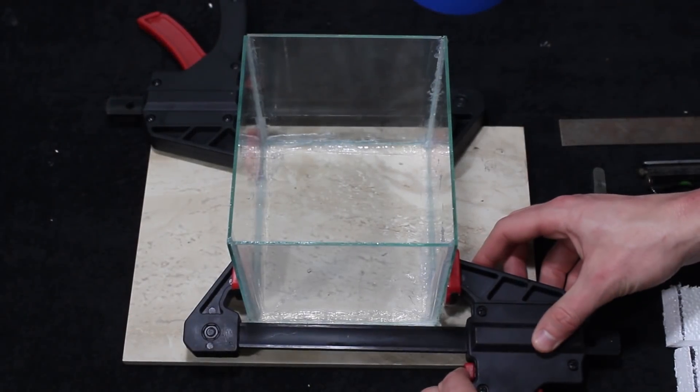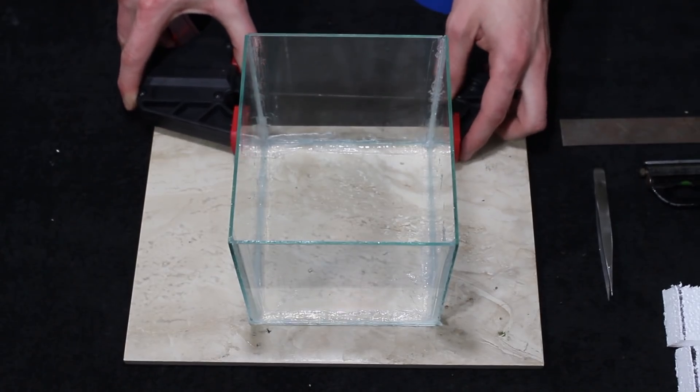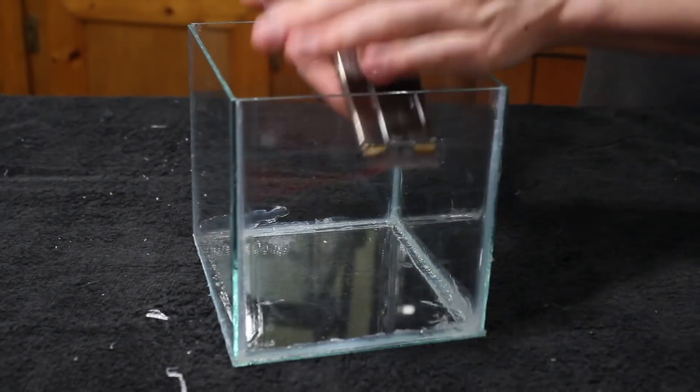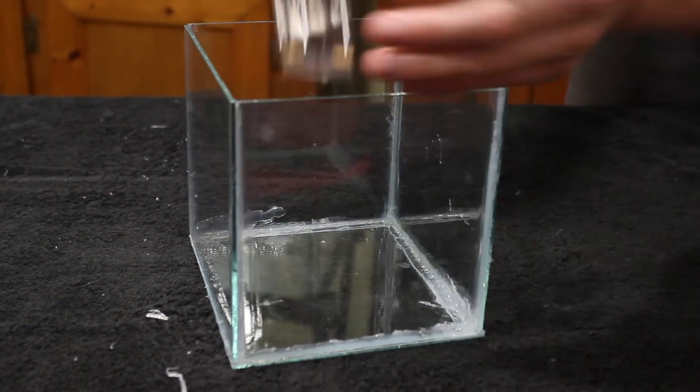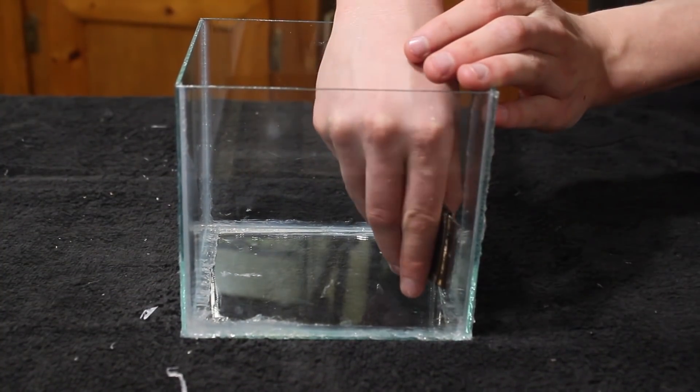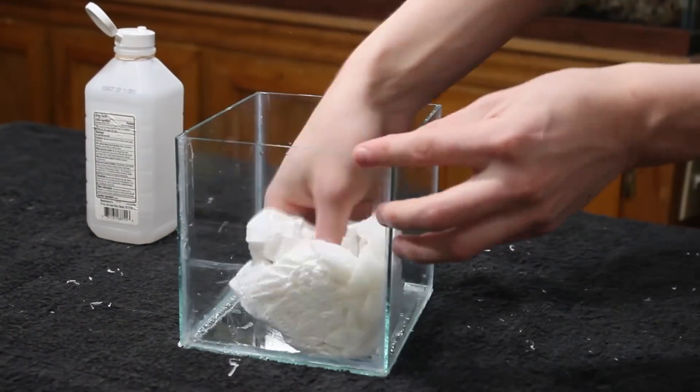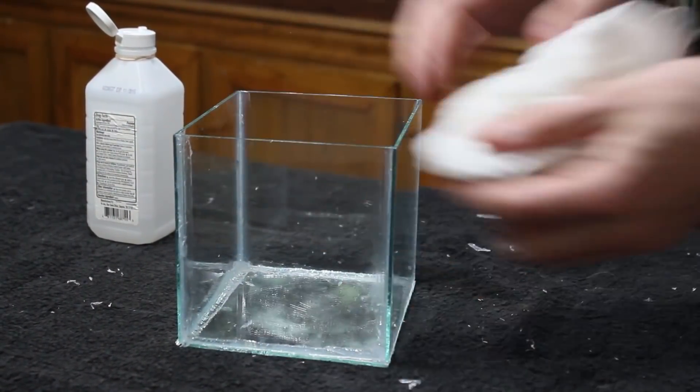Once the silicone was fully cured, the clamps could be removed. To finalize the aquarium, I used a razor scraper to remove any excess silicone or mistakes that occurred during construction. Lastly, I cleaned the glass with some rubbing alcohol and let the alcohol completely gas off.